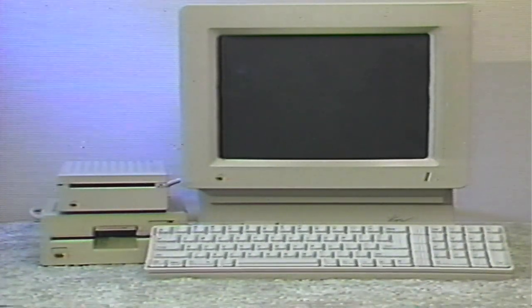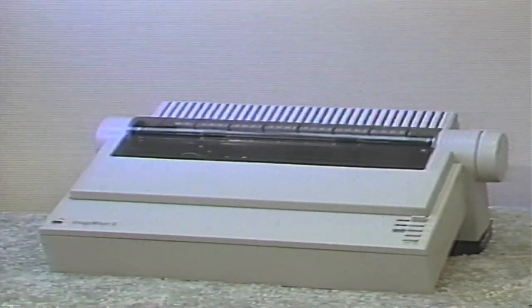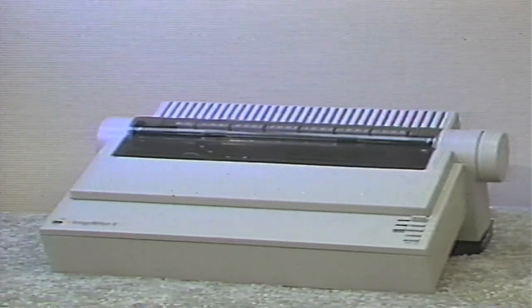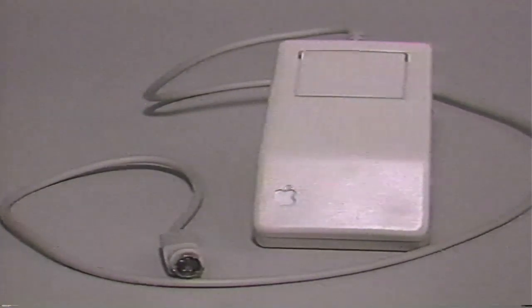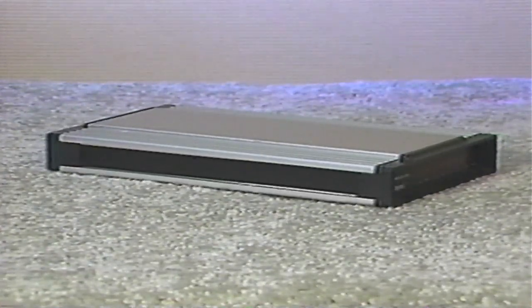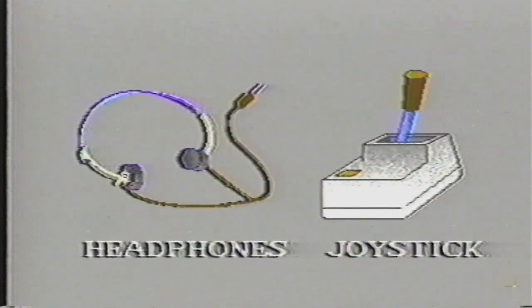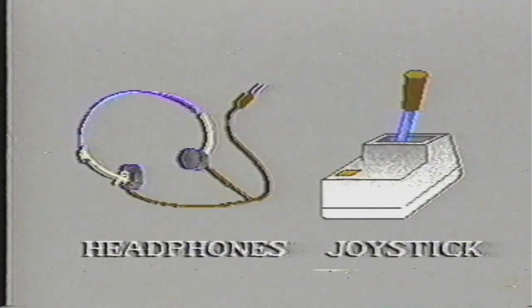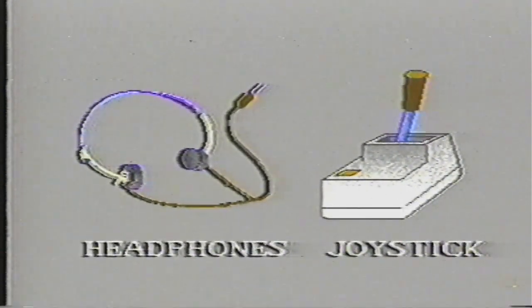Another peripheral device that may be attached to your computer is a printer. If you have an Apple IIgs, you will also have a small peripheral device called a mouse. Together, these components comprise what is called a computer system. You can also attach a modem so that you can use your Apple computer to communicate with other computers. In addition, a joystick and headphones may optionally be added, though they are not usually considered essential components. If you would like to learn more about them, refer to your manuals.